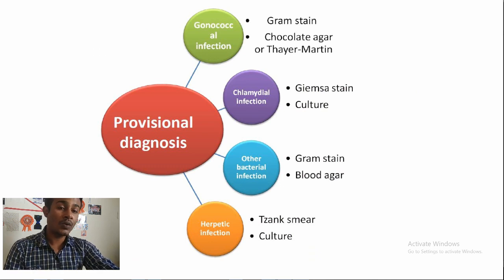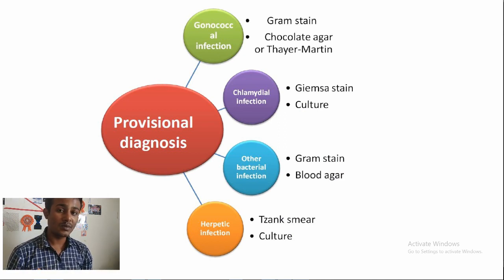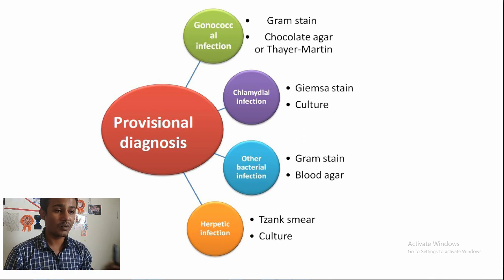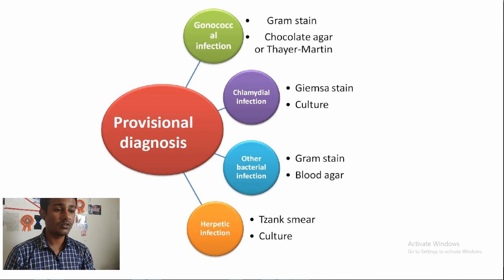For provisional diagnosis, you need to be confirmatory before starting treatment. For chemical irritant, there will be a history of chemical usage — mild, self-limiting, discard that. For septic conjunctivitis, identify the organism: for gonorrhea use chocolate agar or Thayer-Martin agar; for chlamydia, Giemsa stain or culture; for other bacteria like staphylococcus or streptococcus, do a Gram stain then blood agar. If you see vesicles, go for a Tzanck smear — that confirms herpetic infection.